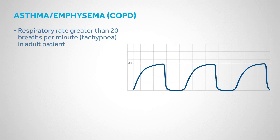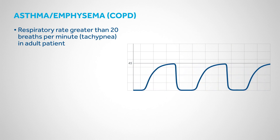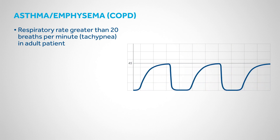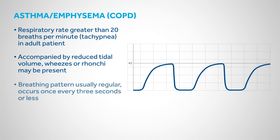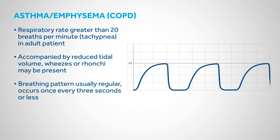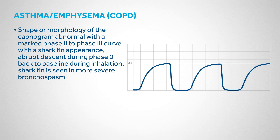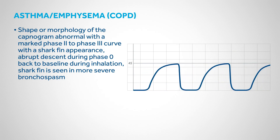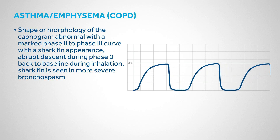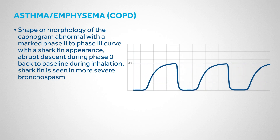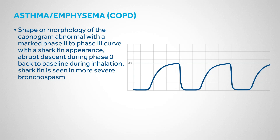With asthma, emphysema, or COPD, respiratory rate is generally greater than 20 breaths per minute, often accompanied by reduced tidal volume, with wheezes or ronchi possibly present. The breathing pattern is regular, occurring once every 3 seconds or less. The capnogram shows an abnormal shark fin appearance with a marked Phase 2 to Phase 3 curve and abrupt descent during Phase 0. The loss of the alpha angle between the termination of Phase 2 and the onset of Phase 3 is the hallmark of bronchospasm.